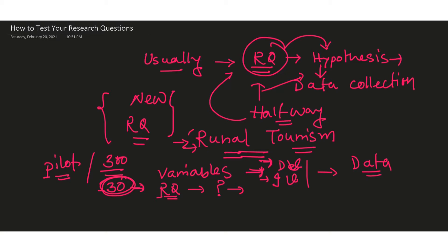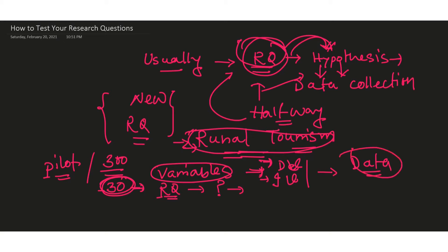So basically, instead of randomly selecting your research question at the beginning and then selecting the hypothesis and going for data collection, the smart approach is: think about the domain first, then select some variables, collect a few pilot data points through a sample survey, and by observing or visualizing the relationship between the dependent and independent variables, decide whether the research question you have in mind is viable.